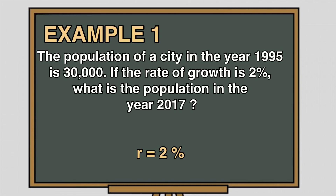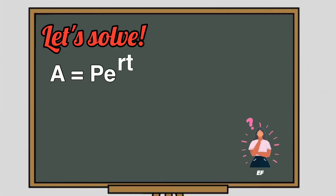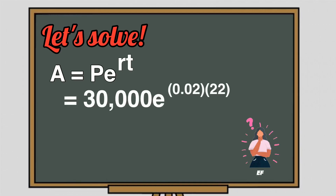Note that before substituting the growth rate in the equation, it should be converted first to decimal form by moving two decimal places to the left. Thus, R is equal to 2%, that is equal to 0.02. Substituting the known variables to the formula A equals P times E raised to RT, we have A equals 30,000 times E raised to 0.02 times 22.